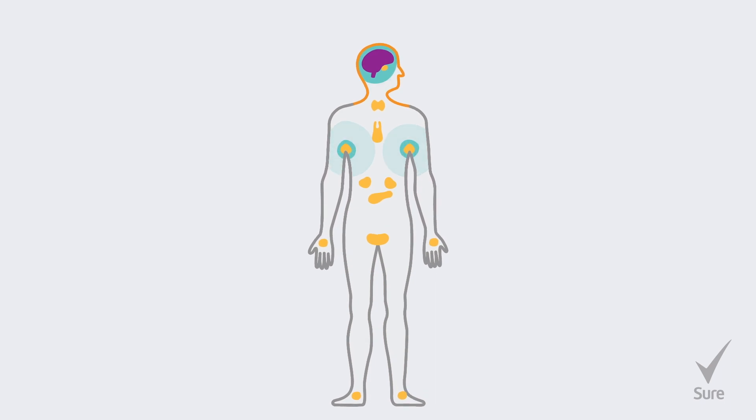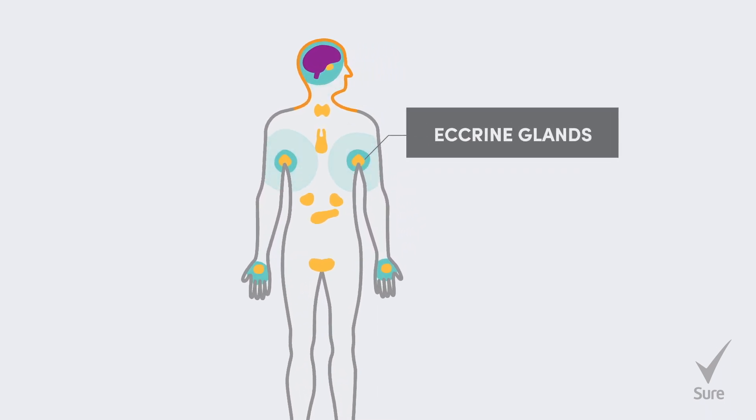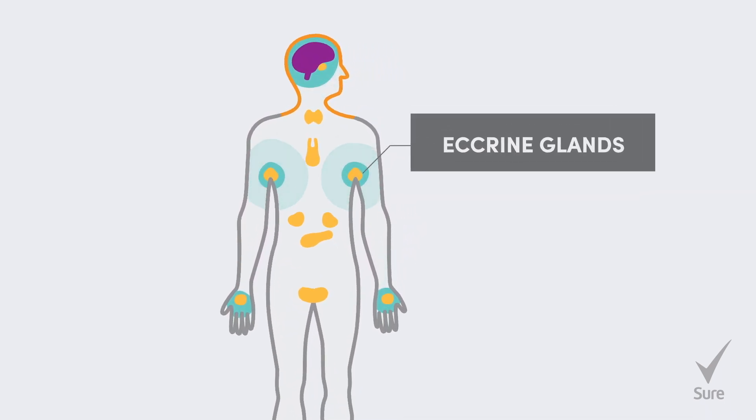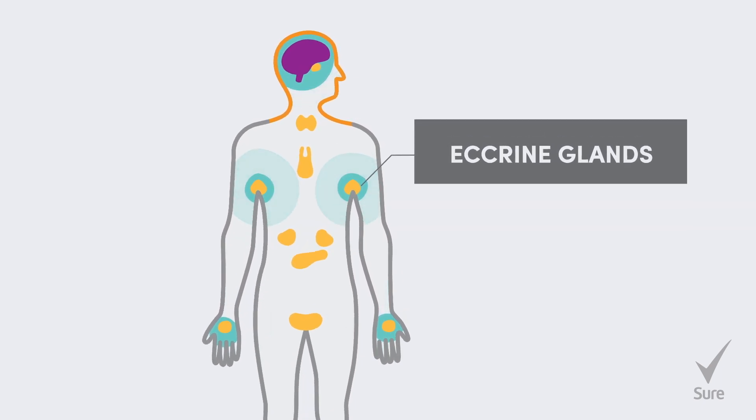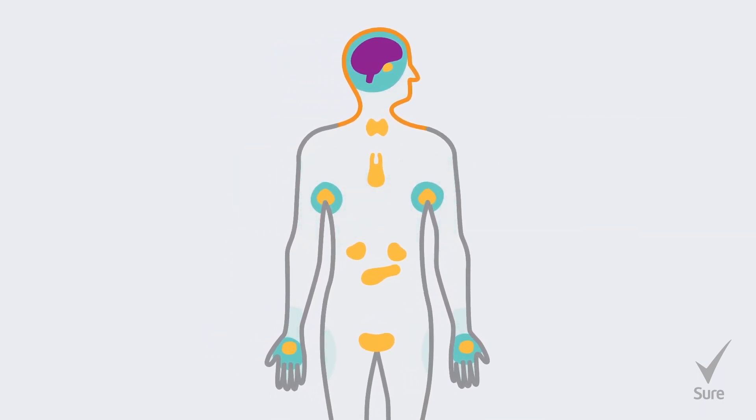We sweat from two types of glands. The eccrine glands mainly cool us down. Male eccrine glands are more active than female ones, which is why men sweat more overall.